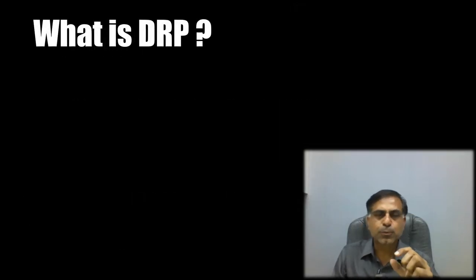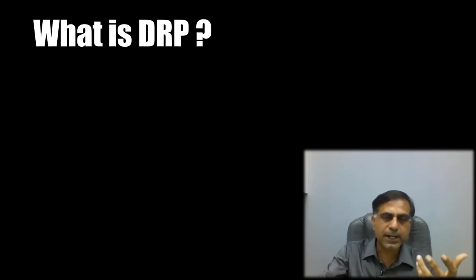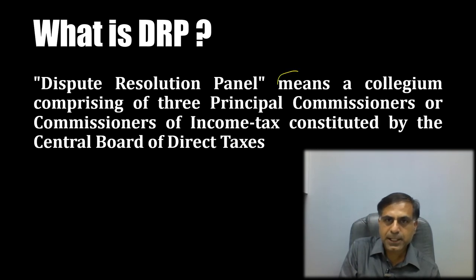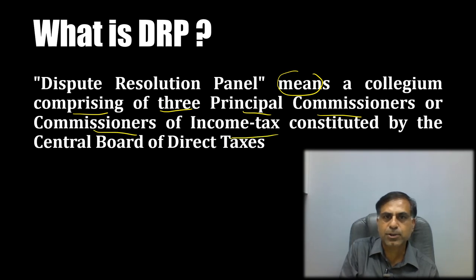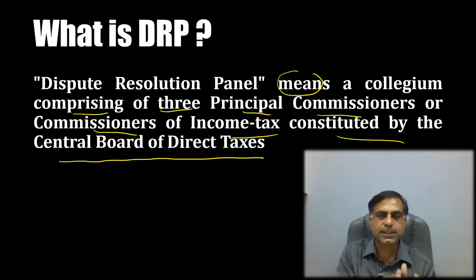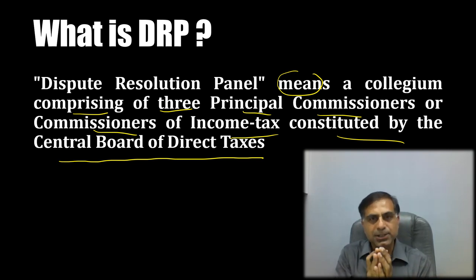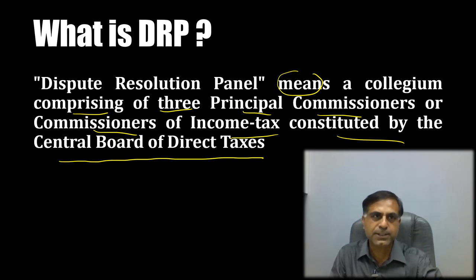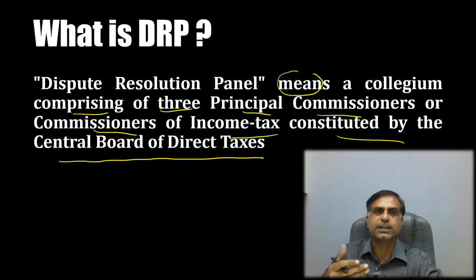Now let me put up what DRP is. The DRP basically means a collegium comprising of three Principal Commissioners or Commissioners of Income Tax, constituted by the Central Board of Direct Taxes. Those dispute resolution panels will comprise this collegium in which the three Principal Commissioners or Commissioners of Income Tax would be the sitting members of the DRP.